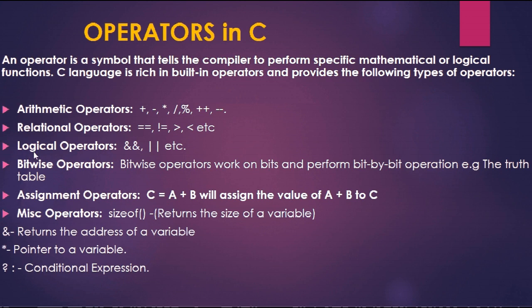The second type is the relational operator. Relational operators are used to check the relation between values — for example, if x is equal to y, or x is not equal to z. For equality we use '==' and for comparisons we use operators like '!=', '>', or '<'. Any type of comparison comes under the relational operator.